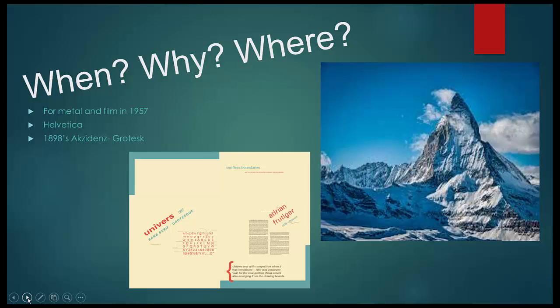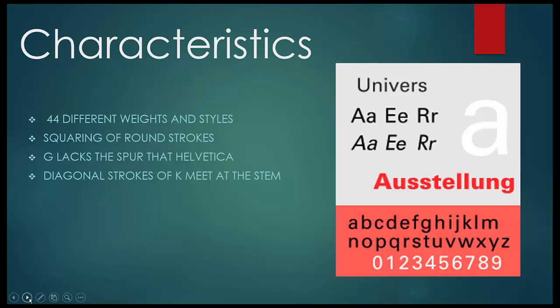Universe was designed for metal and film in 1957 and was inspired by Helvetica and 1898's Akzidenz Grotesque, which we will look at in a little bit. Universe has 44 different weights and styles and was one of the first typefaces to be developed with a numerical system.